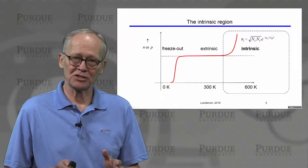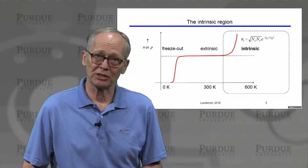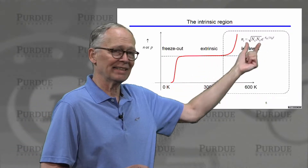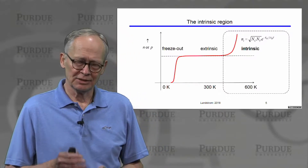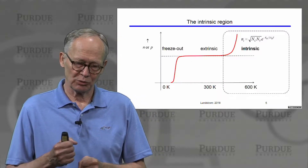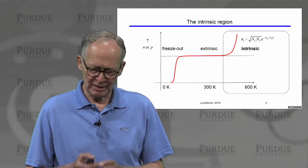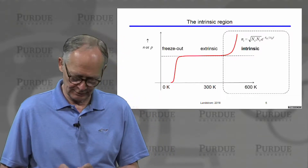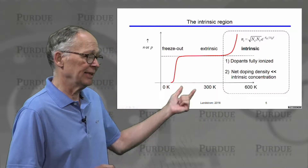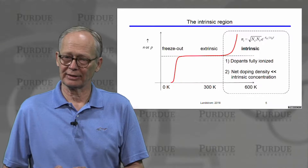Let's shift attention to higher temperatures — the intrinsic region. The intrinsic carrier concentration increases exponentially with temperature. As we increase the temperature, we reach a point where intrinsic carriers created by breaking covalent bonds and exciting electrons across the band gap overwhelm the dopants. The dopants continue to be fully ionized, but the net doping density is no longer large compared to the intrinsic carrier concentration.